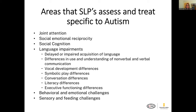Specifically related to autism, we're looking at joint attention, social emotional reciprocity, social cognition — how they're interpreting and understanding the social world around them — different language impairments. They may have delayed or impaired acquisition of language, differences in their use and understanding of nonverbal and verbal communication, vocal development differences, that odd intonation, symbolic play differences, conversation differences, literacy differences, and executive functioning differences.